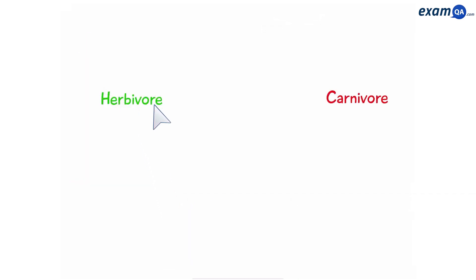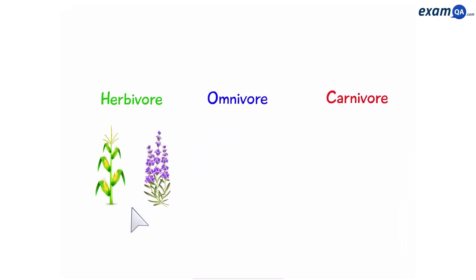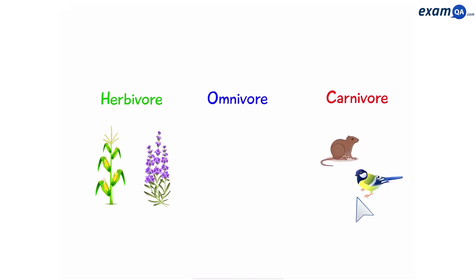Herbivore, carnivore, and omnivore — these are three important words that we need to know when talking about food chains. A herbivore is an animal that only eats plants, for example a cow or a sheep. A carnivore is an animal that only eats other animals — think of a tiger or a lion. Finally, an omnivore can eat both plants and animals — humans, for example.